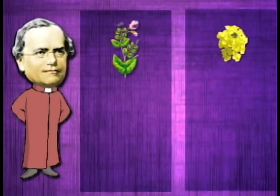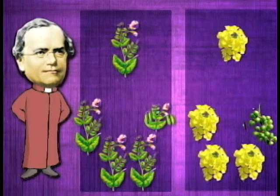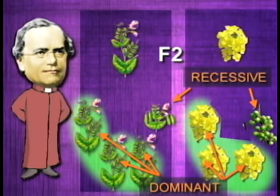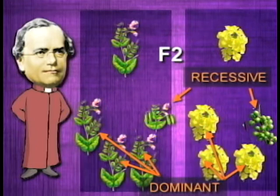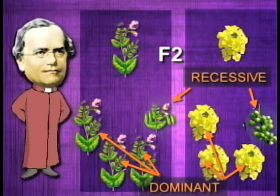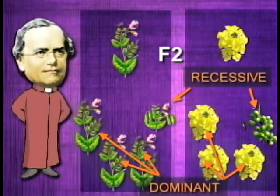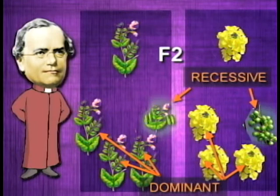However, when Mendel allowed the F1 generation to self-pollinate to produce the second hybrid generation, or F2, both the dominant and recessive traits reappeared. Moreover, both traits appeared in a constant proportion — about three-fourths of the plants showed the dominant traits, and one-fourth showed the recessive traits.